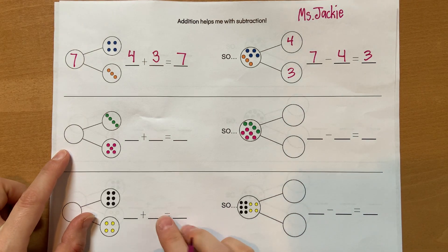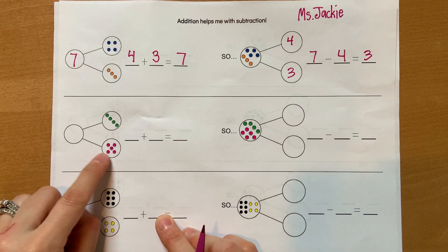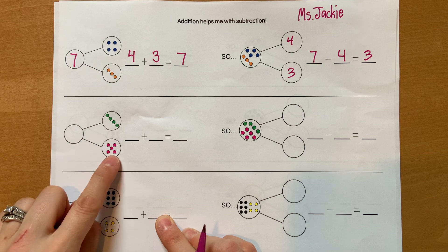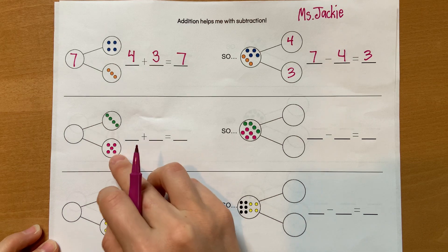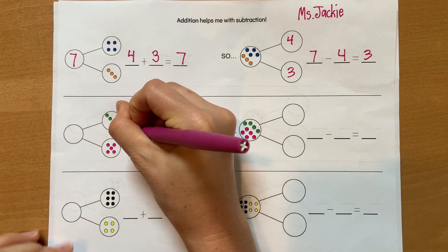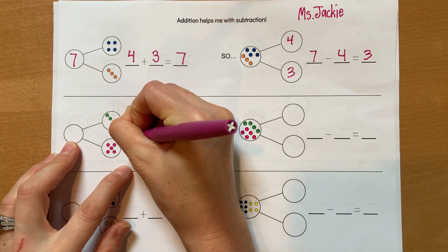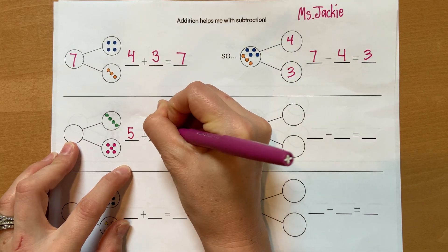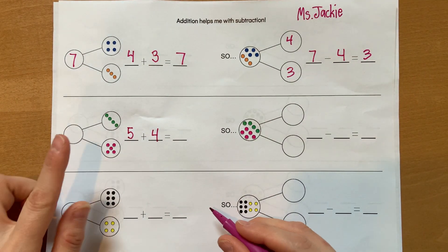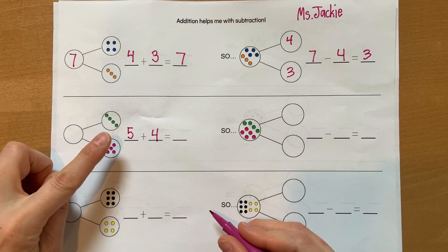All right, let's do it again. Let's go to the next one. In this one, I see five, and in this one, I see four. So five plus four. I'm going to write those numbers down, around, and across the top, plus four.